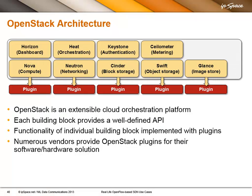OpenStack architecture is extremely modular. Everything is built through building blocks that rely on plugins, which are either supplied in the OpenStack distribution or by individual vendors, and each building block has a well-defined API that it uses to communicate with the plugin. For the networking part, that component is called Neutron — it was Quantum before, now it's Neutron — and numerous vendors provide plugins for the Neutron component of OpenStack.